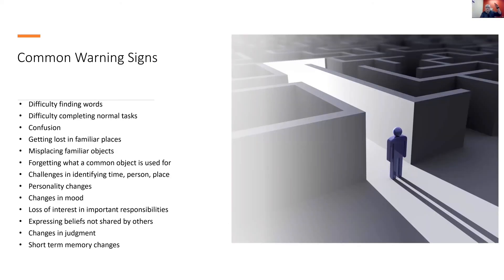Here are some common warning signs. Forgetting how to use a common tool — when my brother-in-law called his wife from the gas station and said he didn't know how to use the gas pump, we knew something was going on. When a spouse was using a GPS to get to and from a workplace they'd worked at for many years, that's a problem. When you put something familiar like your cell phone in an odd place like a microwave, or your book in the refrigerator, when you're confused or disoriented in a familiar place — maybe your local Publix, your church, or your home.